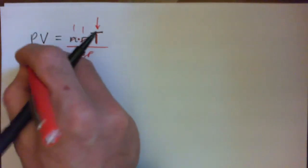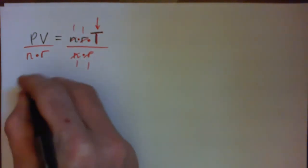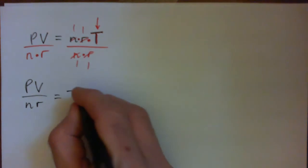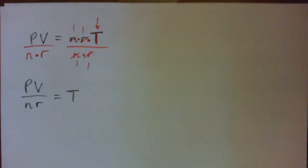So if we divide this side by n times r, we must divide this side also by n times r, or nR, same thing. So we have PV over nR equals T. Okay with that? Yep, that's it.